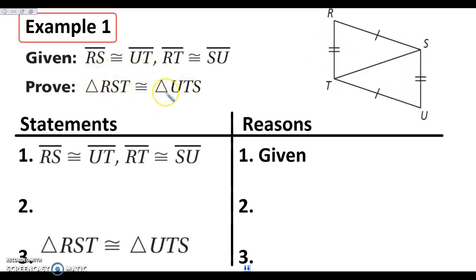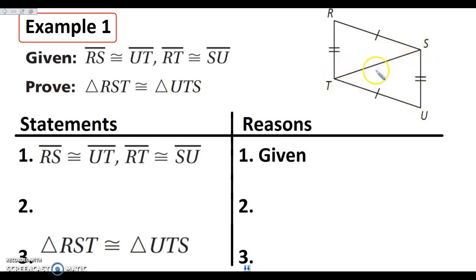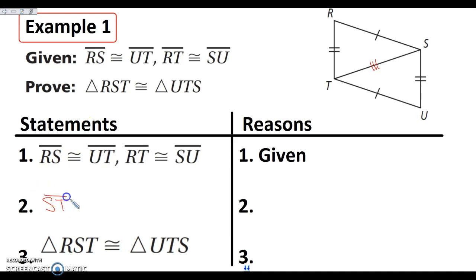We want to prove that the triangles are congruent. I don't know anything about any of these angles, but the question is: what is the third side of this triangle? It's ST. And the third side in the other triangle is also ST. So doesn't it make sense that ST is congruent to itself? It doesn't change from one triangle to the other. So I can write that ST is congruent to ST.